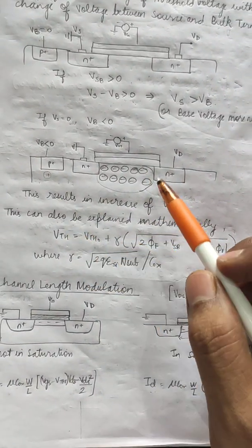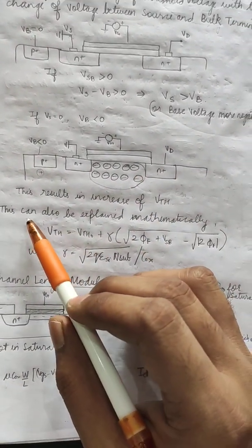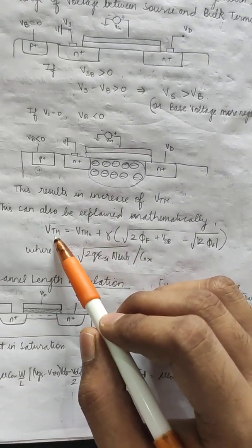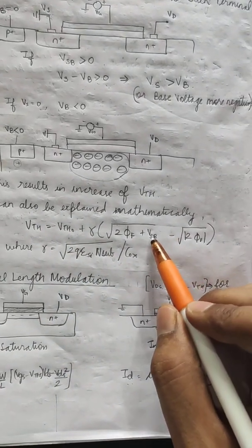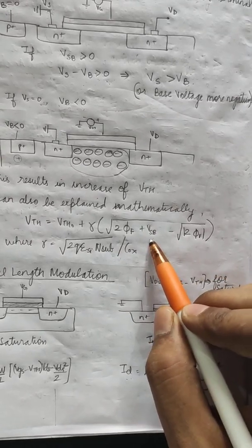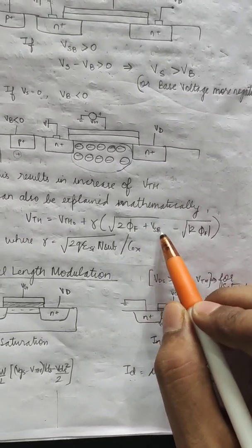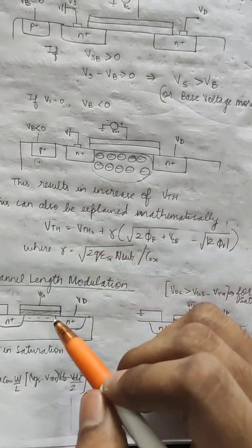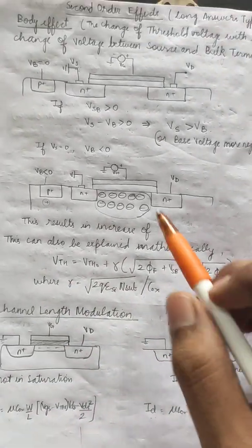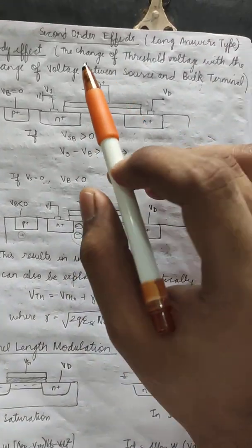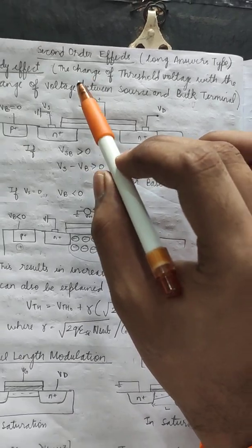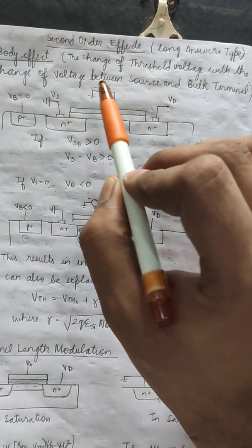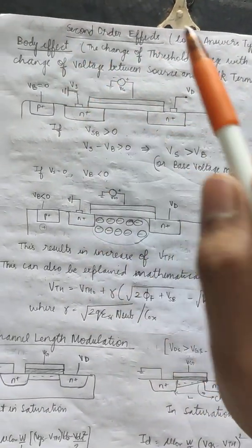This can also be explained mathematically. As you can see, this is the formula of VTH, and VSB is the voltage between source and bulk. So as this voltage increases, VTH will also increase. So the most simple definition is: the change of threshold voltage with the change of voltage between source and bulk terminal is what is the body effect.